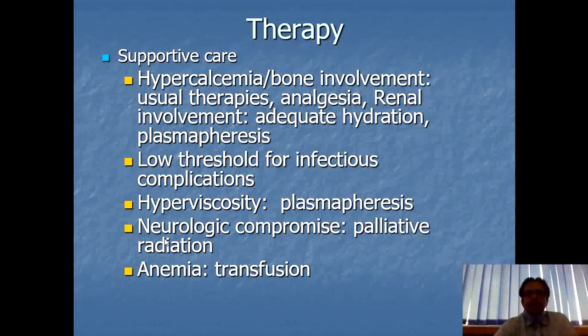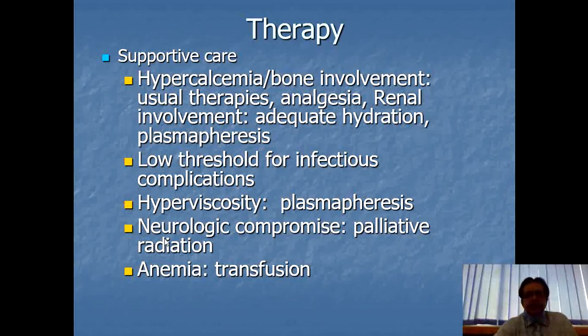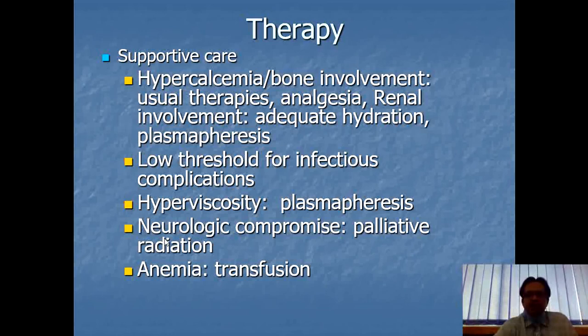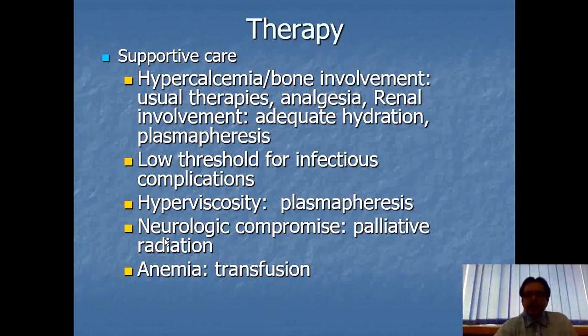Treatment includes supportive therapy: treat hypercalcemia and bone involvement with analgesia, renal involvement with adequate hydration and plasmapheresis. Plasmapheresis is the mainstay of early treatment. The patient has low threshold for infections, so antibiotics are offered repeatedly. For hyperviscosity, plasmapheresis is again required. For neurological compromise, palliative radiation is performed. For anemia or pancytopenia, red cell or whole blood transfusion is given.